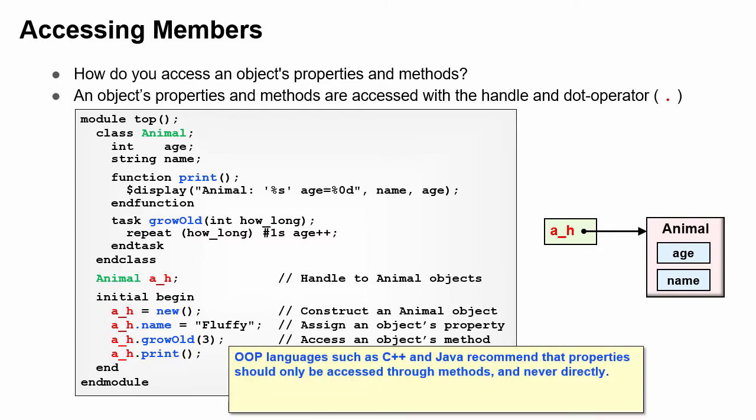Other OOP languages, such as C++ and Java, recommend that you never directly access a property, such as age, and instead create methods such as get age and set age.